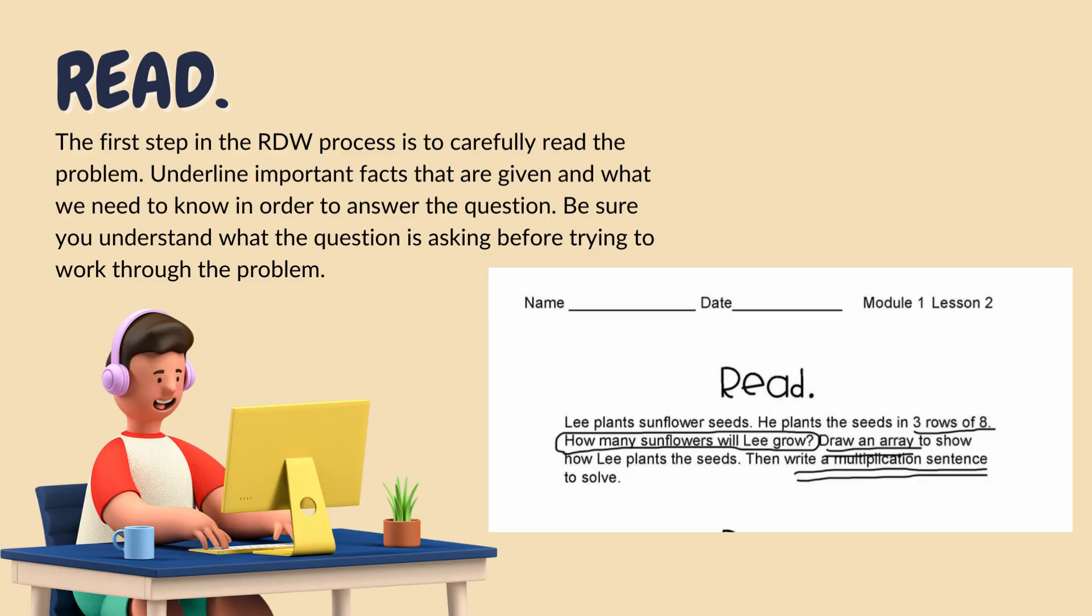The first letter in RDW is R, which stands for Read. This is the first step in the RDW process, and that is to carefully read the problem. You'll underline important facts and also what you need to know to answer the question. You'll want to make sure you understand what the question is asking before you start trying to work through the problem.